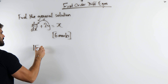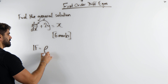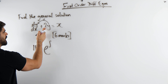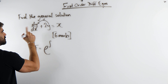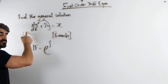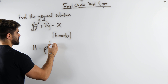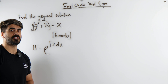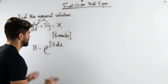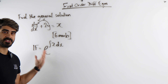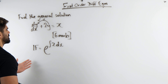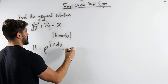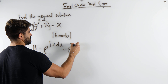The integrating factor is always e to the integral of whatever the coefficient of y is, provided that there is no coefficient of dy by dx. In this case it's 2 dx. And if you guys want me to prove this, let me know in the comments section. It's a very easy proof. So when we integrate this, the integral of 2 is just 2x, so we get e to the 2x.